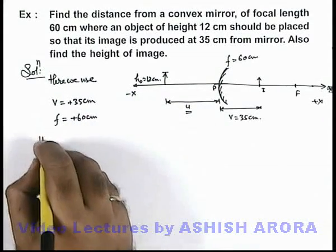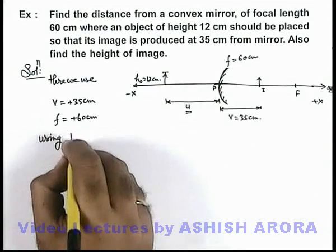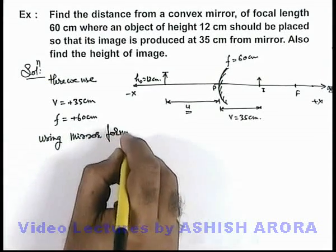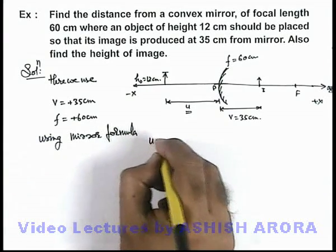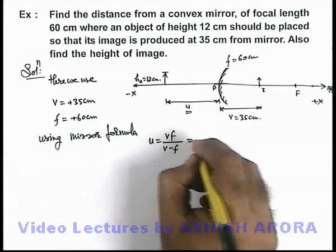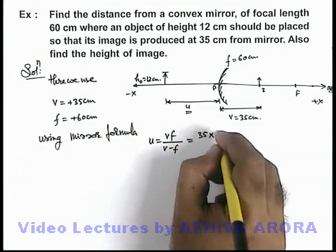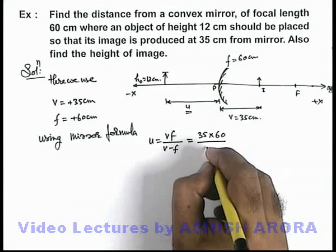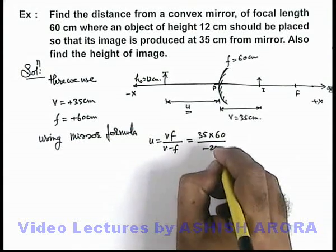Now using the mirror formula we can write u equals vf divided by v minus f. On substituting the values, it is 35 times 60 divided by 35 minus 60, which gives us minus 25.